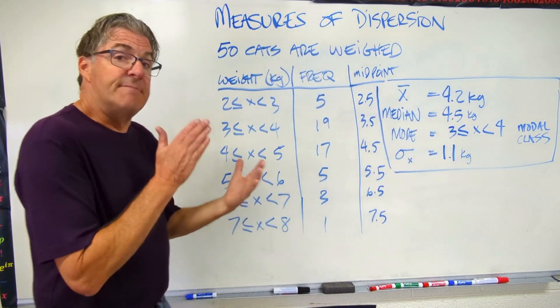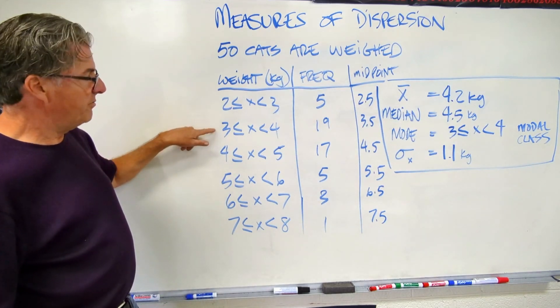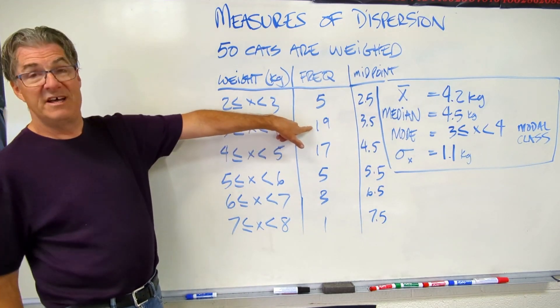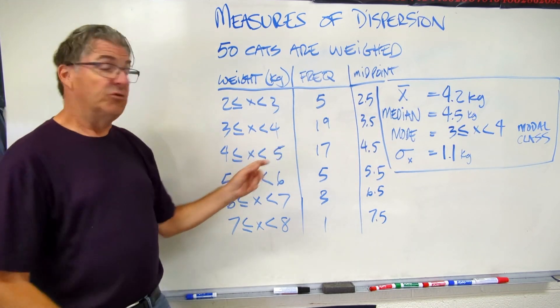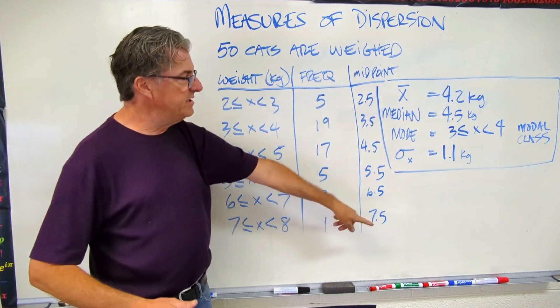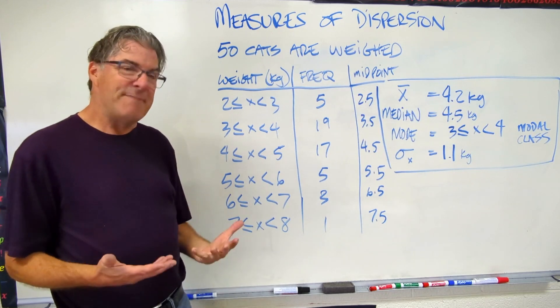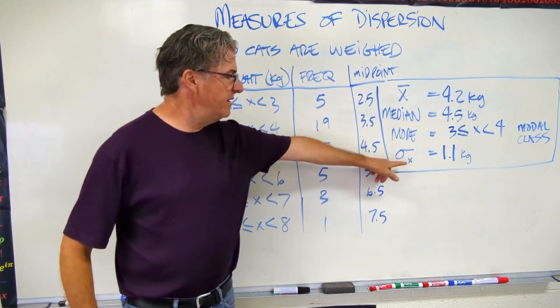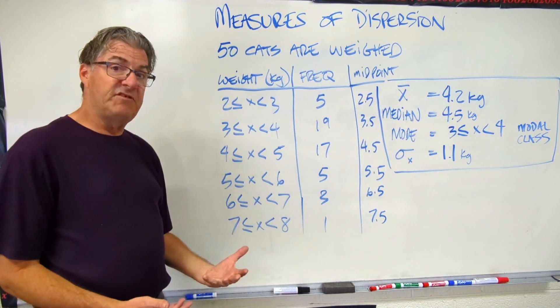So this is the class with the most values in it, and that would be the 3 to 4 because, indeed, we have 19 cats that fell into this class. So when you do have continuous data, and you've divided it up in classes with midpoints, then you don't have a mode, you have a modal class. But it's the same idea. Finally, my standard deviation is 1.1 kilograms. That's the lowest one we've done so far.